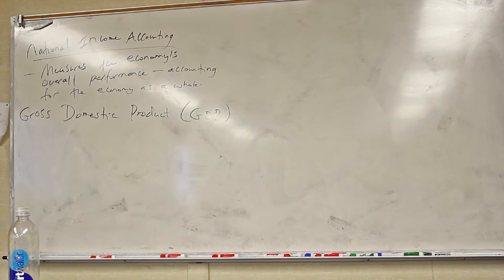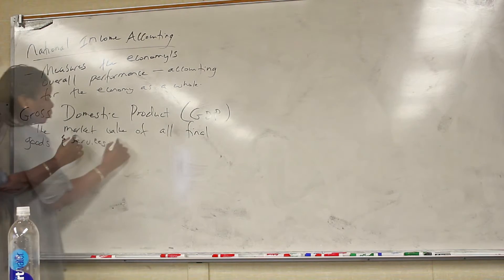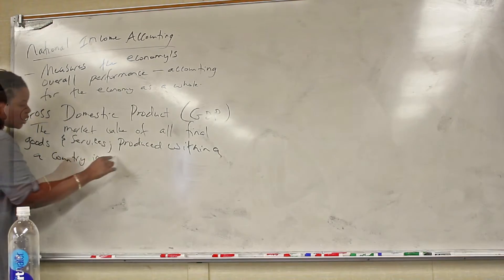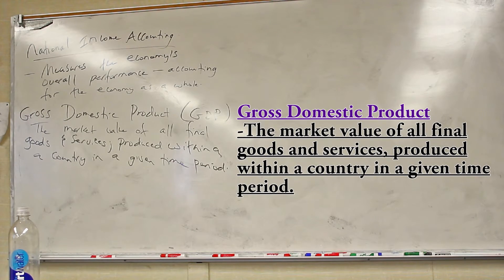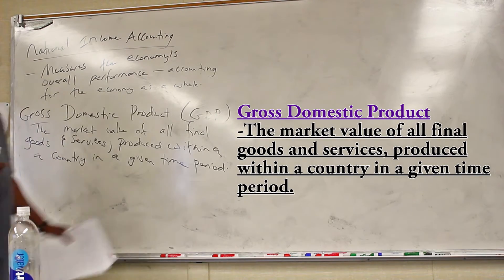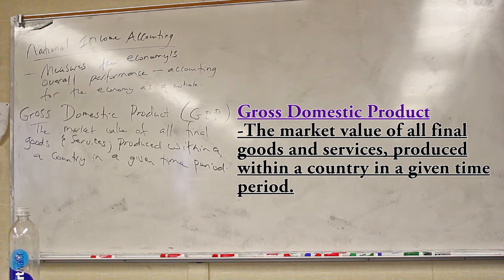Let me give you a definition, and then I'll show you how to put it together. The GDP — the Gross Domestic Product — is the market value of all final goods and services produced within a country in a given time period. We're going to break this down because you need to understand exactly what the GDP is. Very crudely, the GDP is trying to value every single good or service that we produce within the nation.